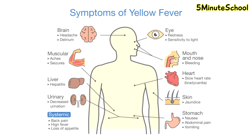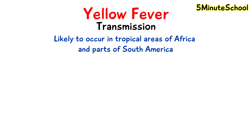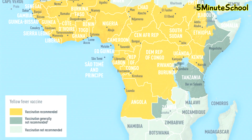The transmission of yellow fever is more likely to occur in tropical areas of Africa, and if you look at this picture here, this is a map which shows which areas of Africa it is recommended to have a vaccination for yellow fever before entering. Some of those countries include Kenya, Nigeria, Congo, and Angola.